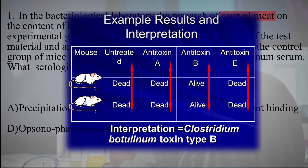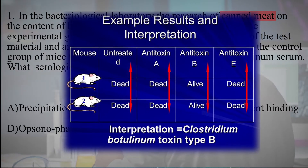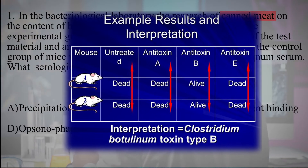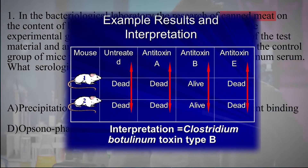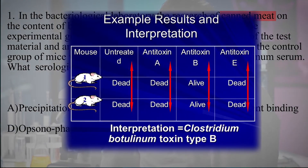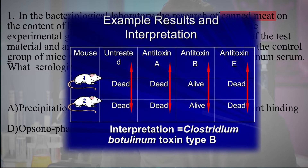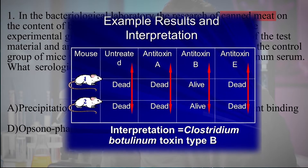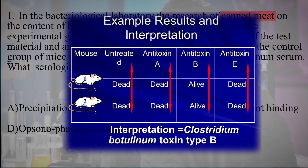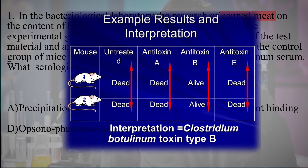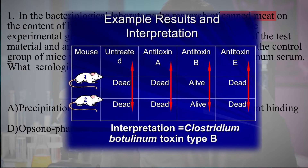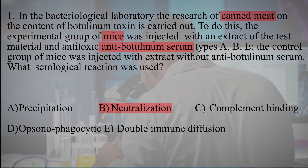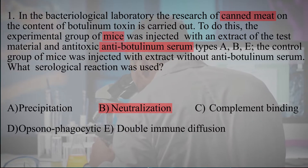Serological reactions in the diagnosis of botulism such as precipitation, complement binding, etc. have not been used. This can be explained by the fact that the lethal dose of botulinum toxin is much lower than that which can cause antigenic irritation and the appearance of specific antibodies.